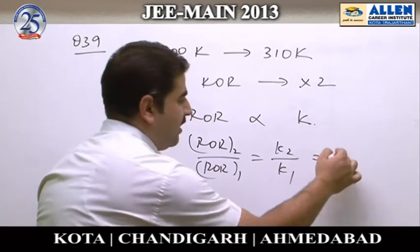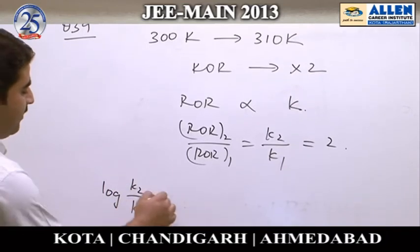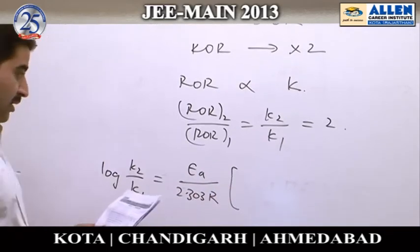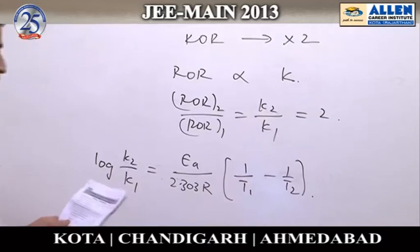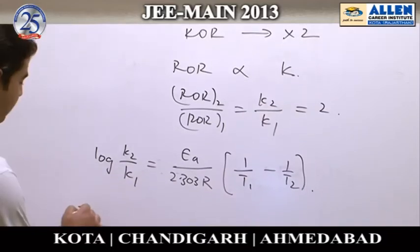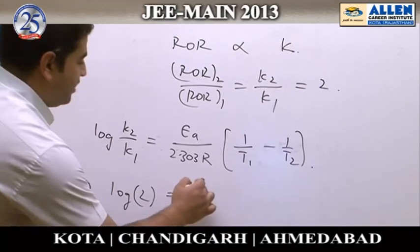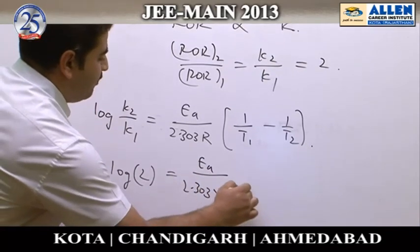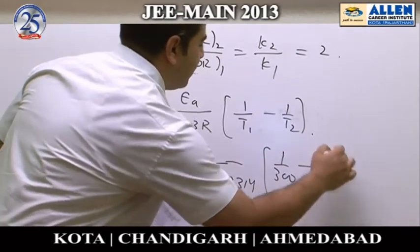Using the Arrhenius equation, we write: log(K2/K1) = Ea / (2.303 × R) × (1/T1 − 1/T2). Substituting the data: K2/K1 = 2, R = 8.314 J/mol·K, T1 = 300 K, T2 = 310 K.